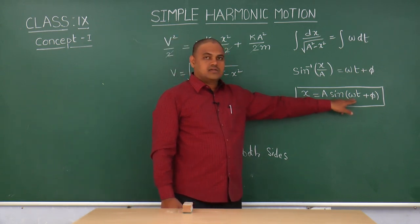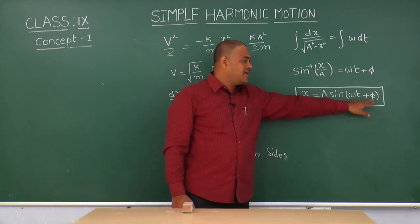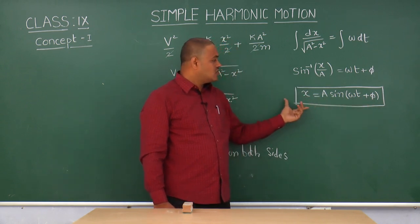Omega means the angular frequency of the particle. Phi means the phase of the particle. So this is the solution for equation of SHM.